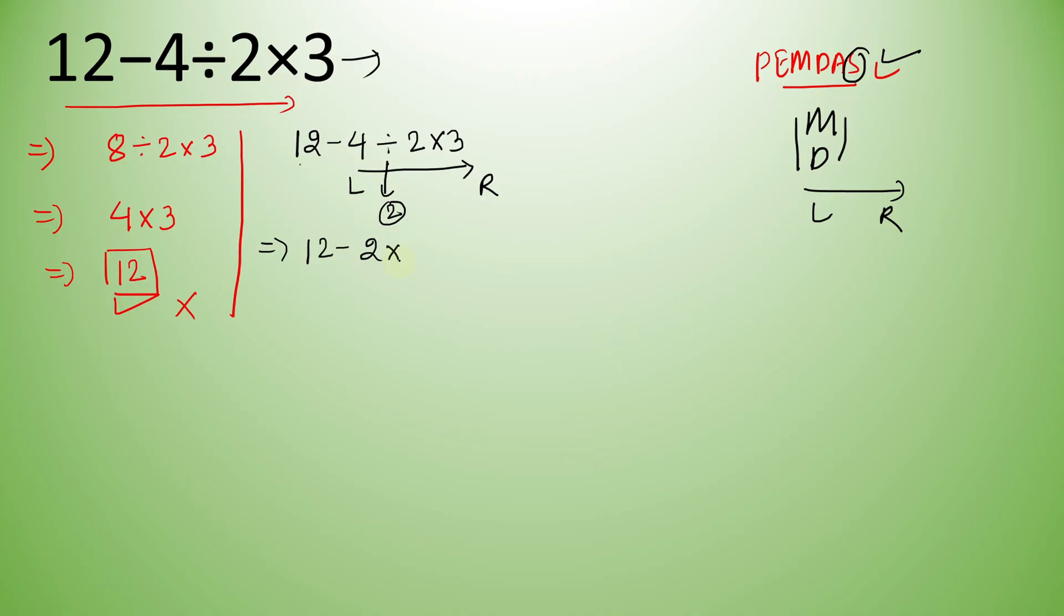Now 2 times 3 gives 6. So we write 12 minus 6, and 12 minus 6 equals 6.